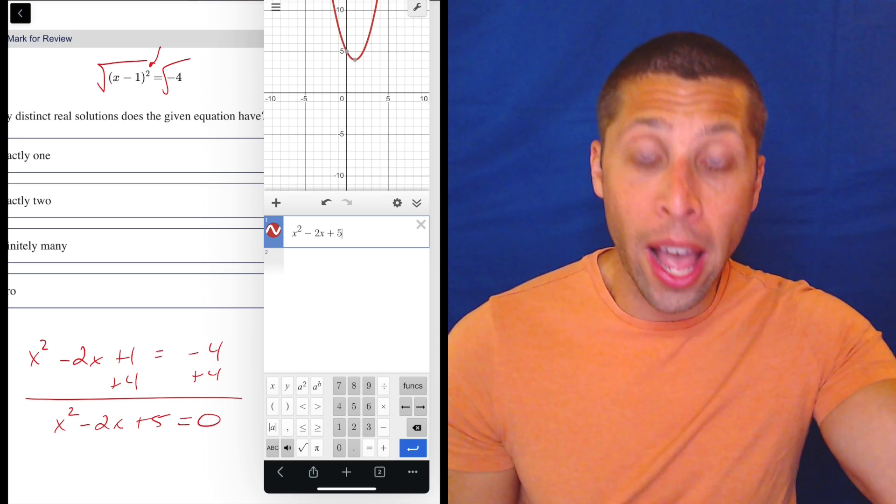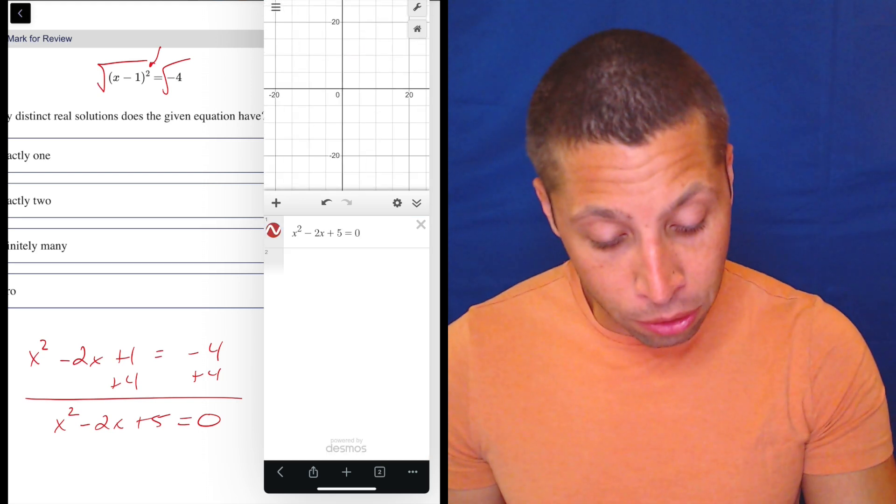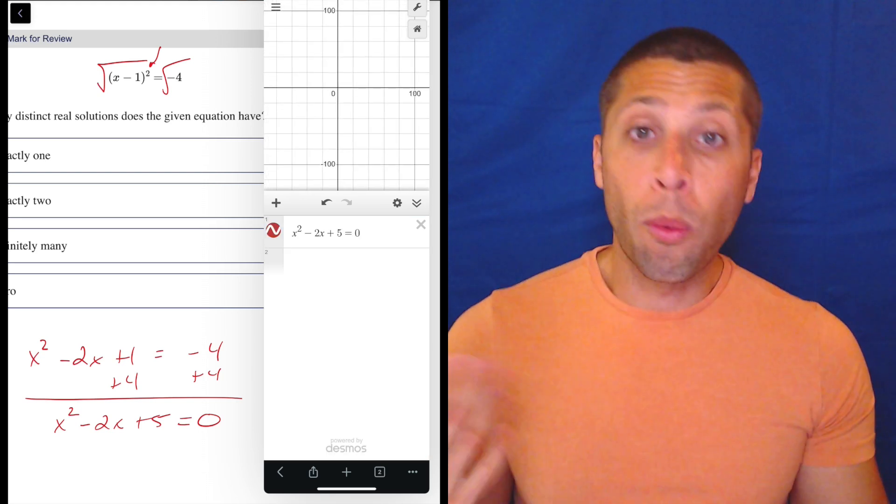Now, if we put the equal 0, watch what happens, right? Nothing. Nothing's there. We could zoom out. There's nothing there. Now, why?